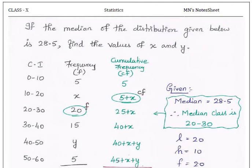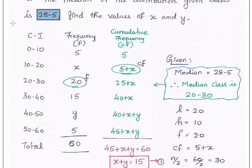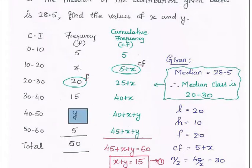Next problem: given the median, finding the unknowns. If the median of the distribution is 28.5, we have to find the values of x and y. The class intervals go from 0 to 60, and corresponding frequencies are given with x and y as unknowns. When you have two unknowns, they will always give you the sigma F value. Sigma F is given as 60, which is the total frequency.